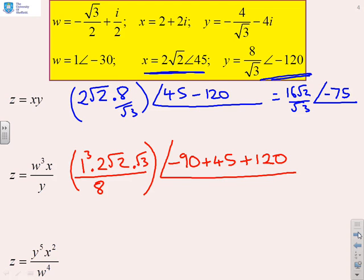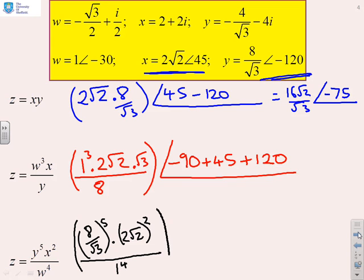And the final one. We've got z equals y to the 5 x squared over w to the 4. So again, you'll remember that we simply write things down as they come. The modulus of y is 8 over root 3, and that's to the power 5. So I've got 8 over root 3 to the power 5. The modulus of x is 2 root 2, and that's squared. So I simply write 2 root 2 squared. We've divided by w. The modulus of w is 1, so we're dividing by 1 to the power 4. So there's the modulus of the result. And again, I'm not going to bother multiplying it out longhand, because that's rather tedious, and you can do that very easily.